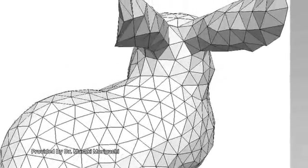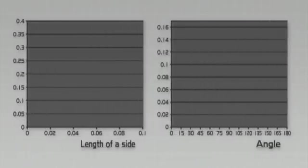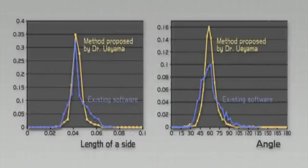Up until now, there was software that generated triangular meshes automatically. We compared the lengths of the sides and the distribution of inner angles between the method proposed by Ueyama and commonly used software. The method proposed by Ueyama is shown in yellow. It has a more distinctive peak than that created using existing software. This means that Ueyama's method successfully produces a mesh with uniform side lengths and inner angles.